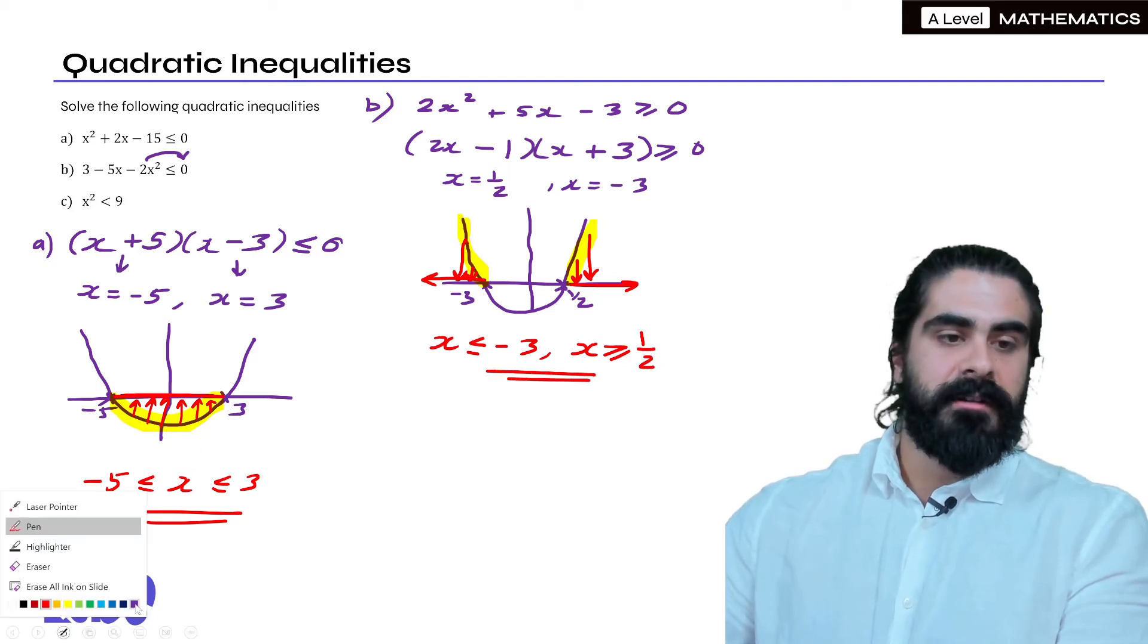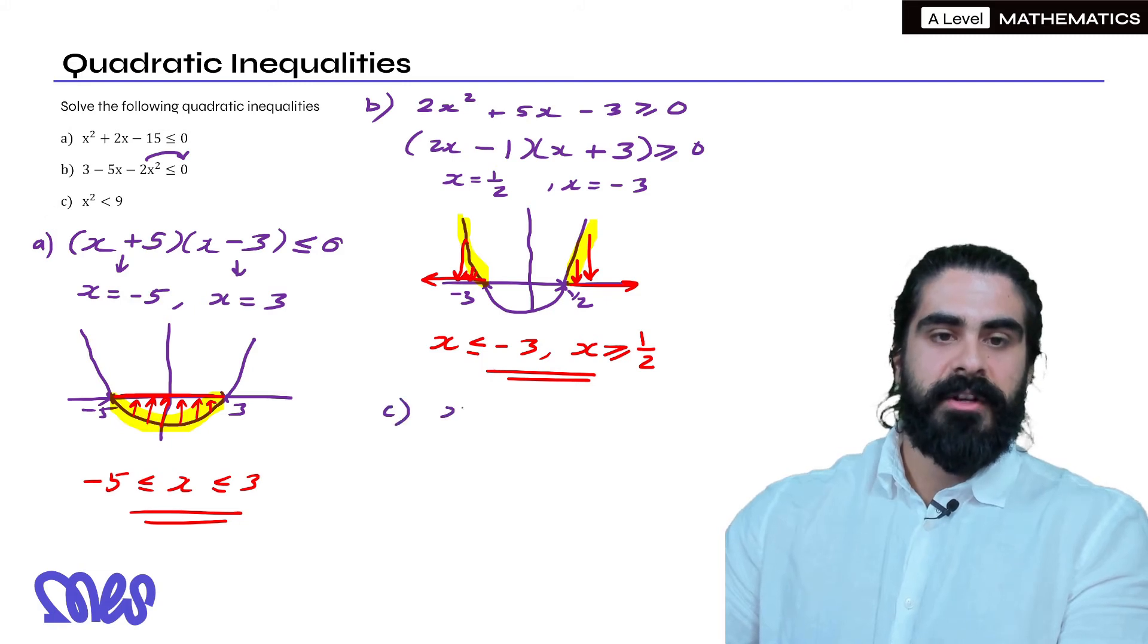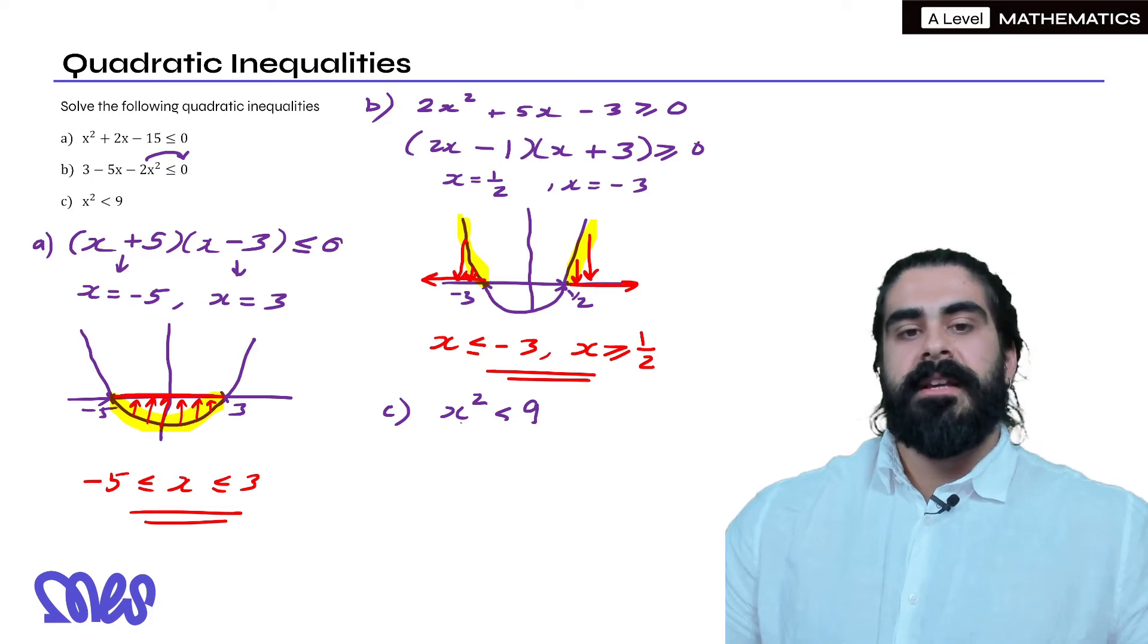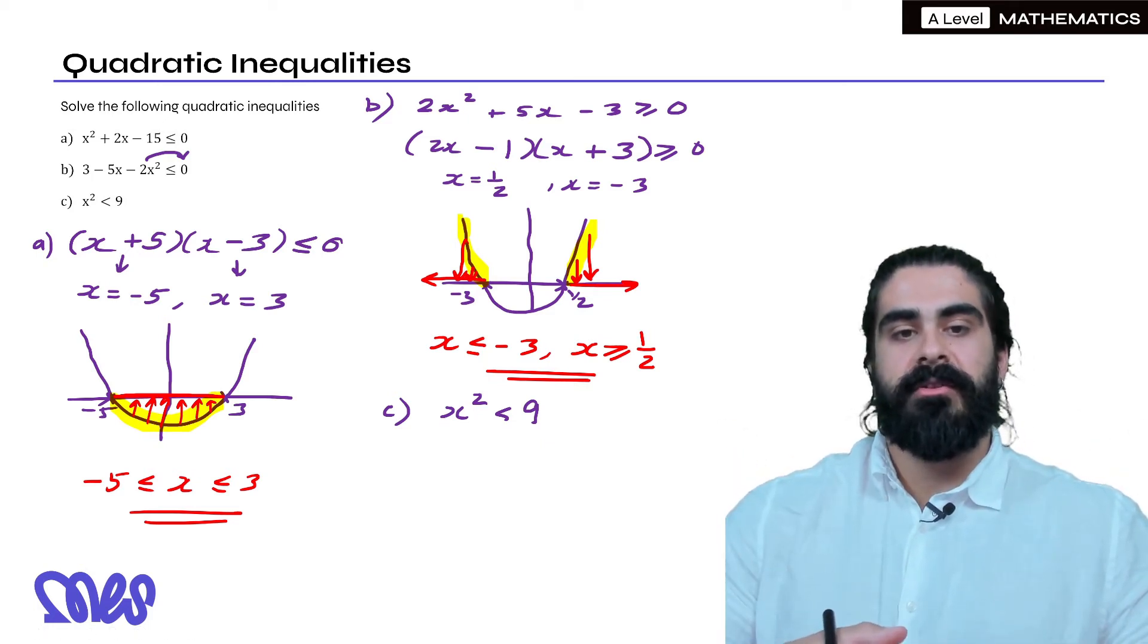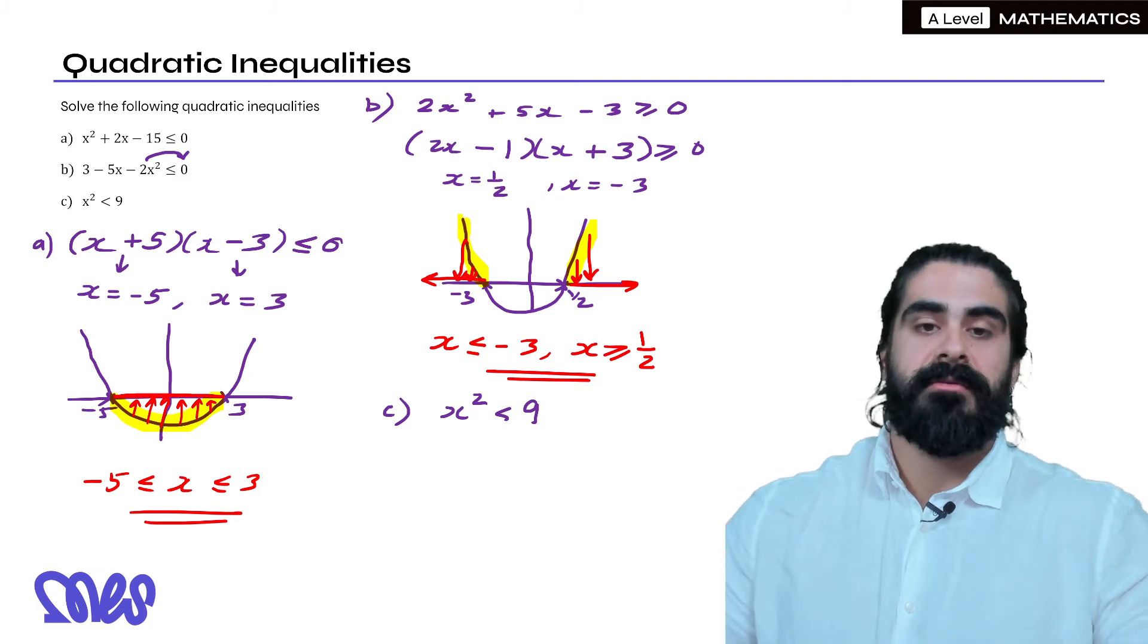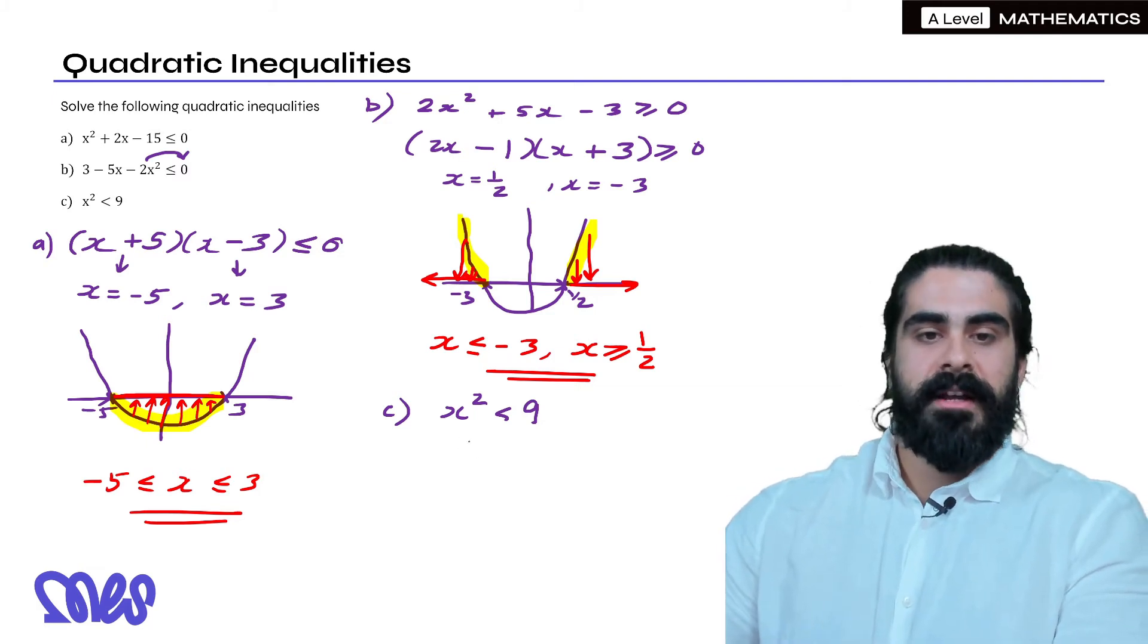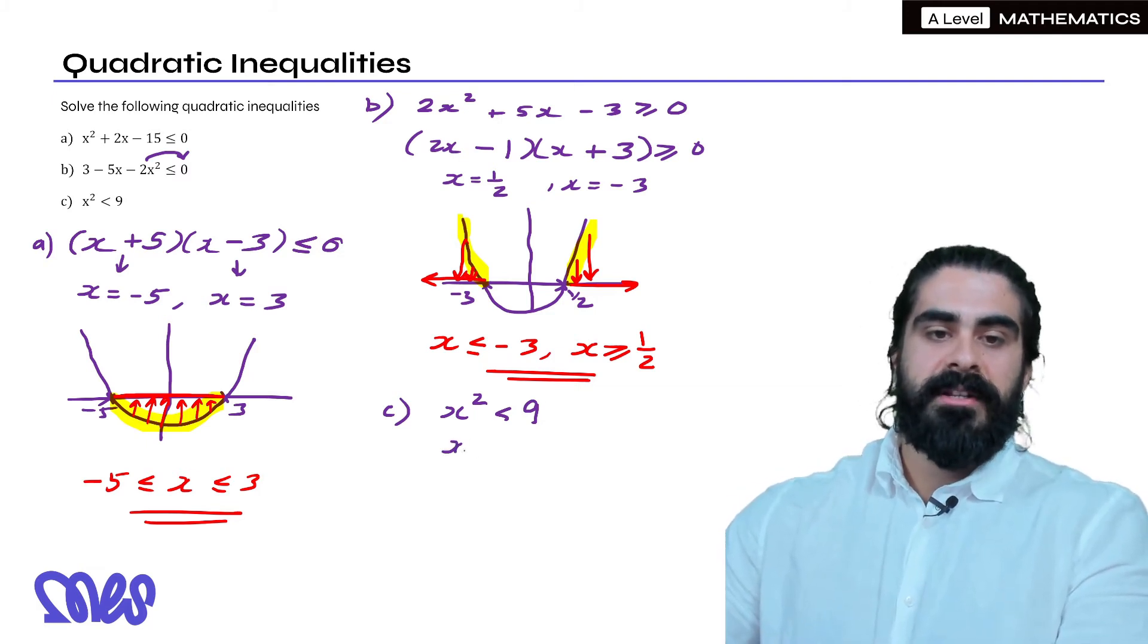The final one. The most common thing students do for this kind of question is they just square root both sides. Then they say something like x is, well it's a mixture, either x is between 3 and minus 3 or x is bigger than 3 and less than minus 3. But we want to make sure that we get it right every single time. So it's best we move the 9 over and factorize instead.